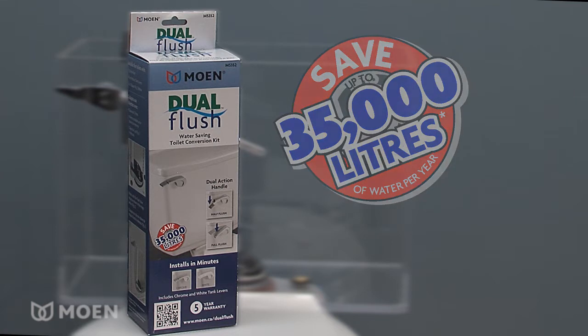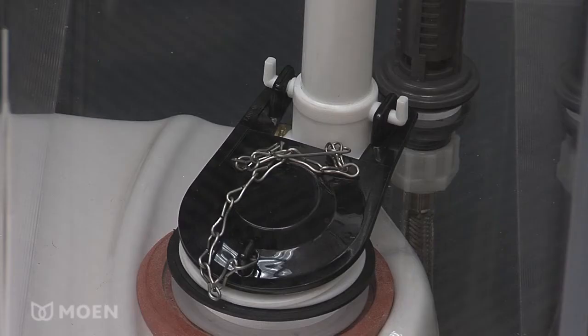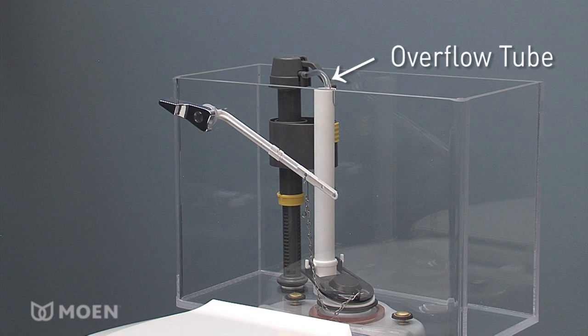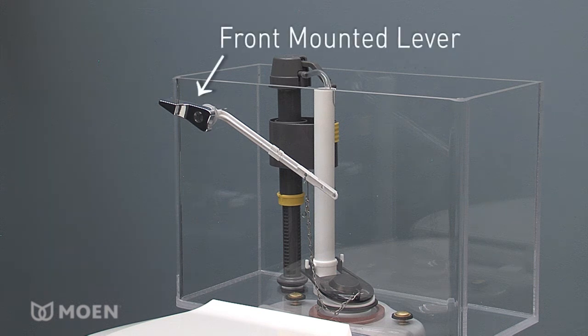For a successful installation, your current toilet must have a 2-inch flush valve with a flapper that is 3 inches from edge to edge and have an overflow tube as shown here. Finally, your tank lever must be mounted on the front of your toilet.